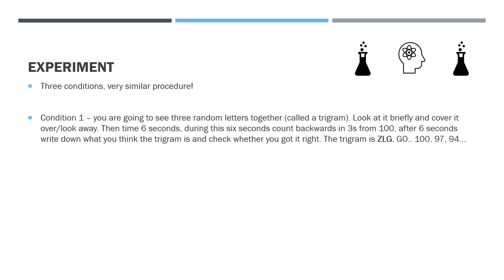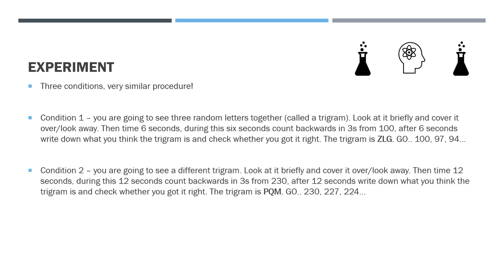Next task, exactly the same procedure, a different number and a different trigram. The trigram you need to remember is P, Q, M, and count backwards from 230 in threes for 12 seconds. Go: 230, 227, 224... Stop - again, try without looking at the screen the whole time, write it down. It should have been P, Q, M - did you get it? Give yourself a mark if you did.